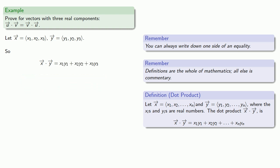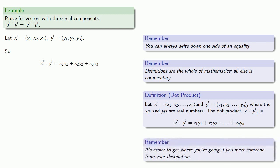Now, we'll introduce another idea of proof strategy. It's easier to get where you're going if you meet someone from your destination. And, in this particular case, we would like to get to Y·X, because that's the claim. The dot product is the same, no matter what order you take the vectors.